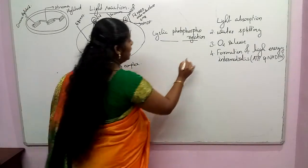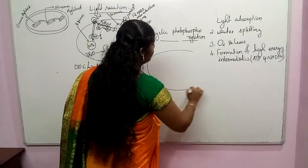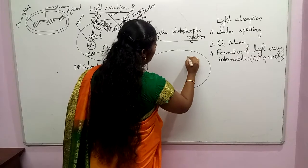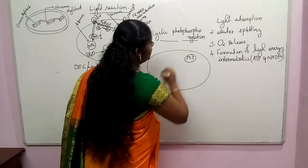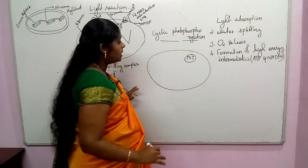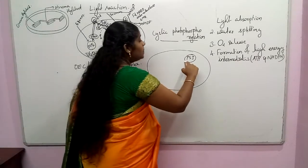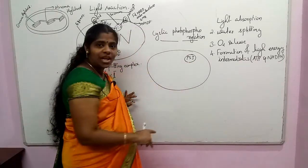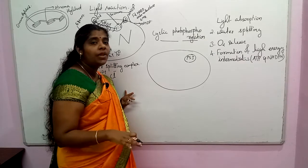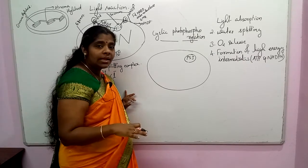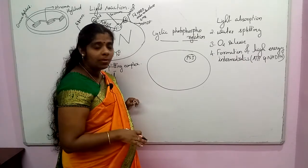We know that cyclic photophosphorylation occurs in association with PS1. PS1 is associated with cyclic photophosphorylation. PS1 is present in the non-appressed region of the grana thylakoid, and it is also present in the stroma thylakoid.